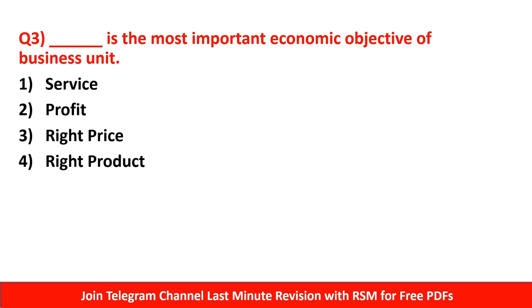Question number 3: Dash is the most important economic objective of the business unit — Service, Profit, Right Price, or Right Product. Economic objective means everything related with money. The right answer for this question is Profit. Profit is the most important economic objective.